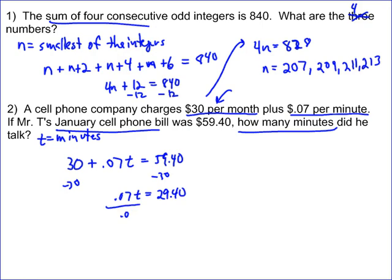When you divide both sides by 0.07, you can find out that the answer to this problem is going to be equal to 420 minutes. So T is going to be equal to 420 minutes, because if you divide 29.40 by 0.07, you'll find out that it equals 420. So the number of minutes that Mr. T used was 420.